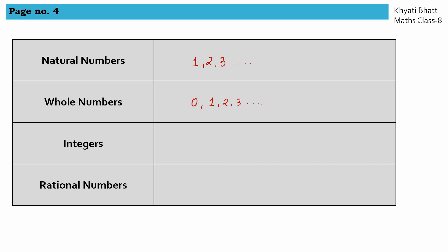Integers are: minus 2, minus 1, 0, 1, and 2. Natural numbers have only positive numbers but not 0. Whole numbers add 0 along with positive numbers. Integers include negative numbers, 0, and positive numbers — all three. Rational numbers are any number in the form a/b where b is not 0. This includes both negative and positive rational numbers.